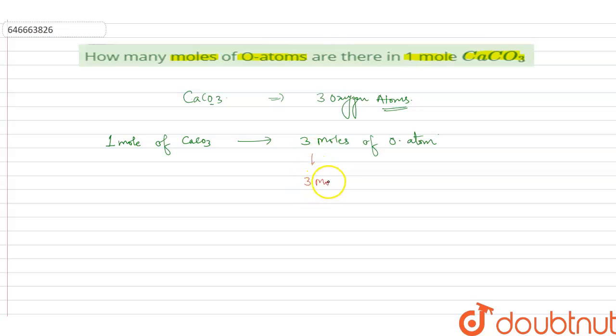three moles into Avogadro number. The value of Avogadro number is 6.023 × 10²³. Since in the question we have been asked that